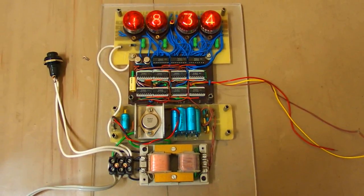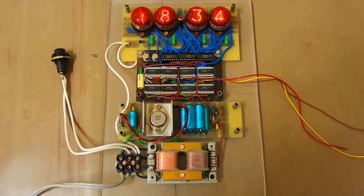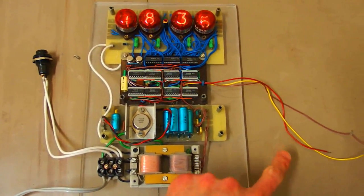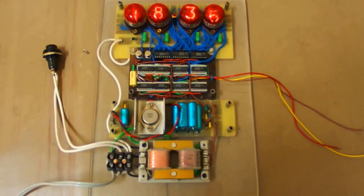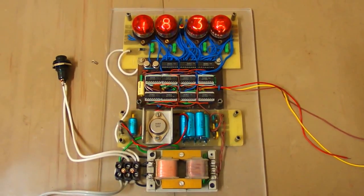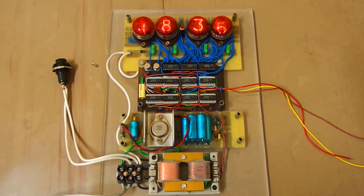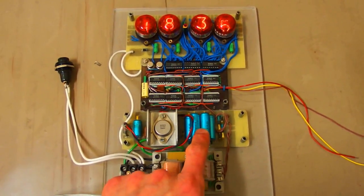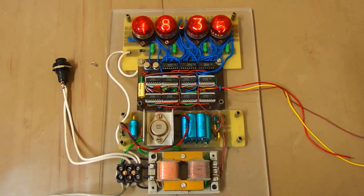And this is my Nixie clock number four. This one is not yet finished. It has to have a cover and buttons added. And this one is interesting especially because it's completely made of original parts. There are no modern parts. All the parts in it were available in the 70s.